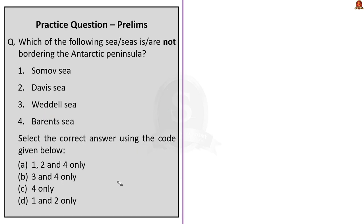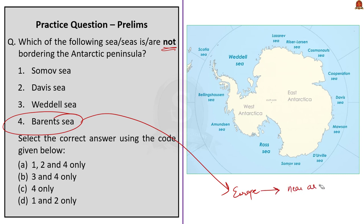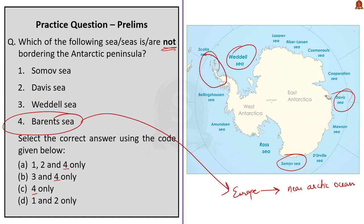The final question asks which seas are NOT bordering the Antarctic Peninsula. Options are: 1. Somov Sea, 2. Davis Sea, 3. Weddell Sea, 4. Barents Sea. Those well-versed in geography will recognize that Barents Sea is not in the Antarctic region — it is near the Arctic Ocean, so option 4 must be in the answer. The question specifically asks about seas bordering the Antarctic Peninsula, not Antarctica as a whole. Weddell Sea does border the Antarctic Peninsula. Somov Sea is in the southern region and Davis Sea is in the eastern part of Antarctica, while Antarctic Peninsula is on the western part. Therefore the correct answer is option A, 1, 2 and 4 only.